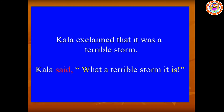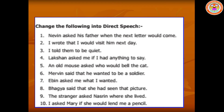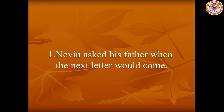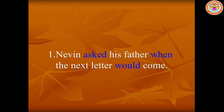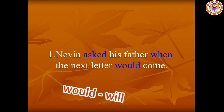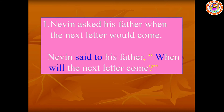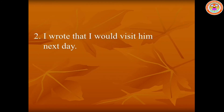Dear children, let's do the book exercise - change the following into direct speech. There are 10 questions. Number one: 'Nevin asked his father when the next letter would come.' In this sentence there is no conjunction, so it is a WH type of question. 'Asked' should be changed into 'said to', the verb 'would' should be changed as 'will', and we have to write 'will' in front of the subject 'the next letter'. So the answer is: Nevin said to his father, 'When will the next letter come?' Remember, we have to put the question mark at the end.